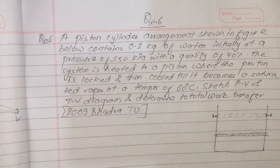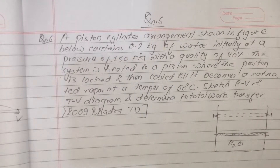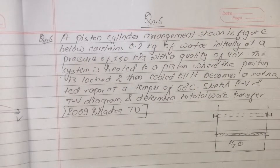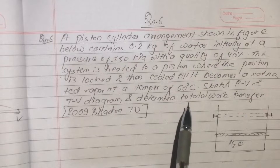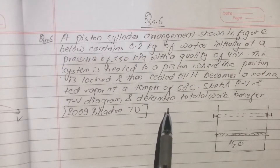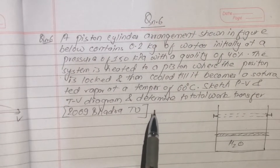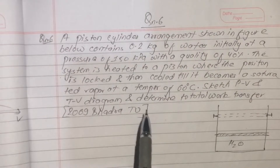We start with Unit 3: properties of common substances. In a piston-cylinder arrangement as shown in the figure, there is 0.2 kg of water initially at a pressure with an initial quality of 40%. The system is heated until the piston is locked, and then cooled until it becomes a saturated vapor at a temperature of 60 degrees Celsius. Draw the PV diagram and TV diagram and determine the work transfer.